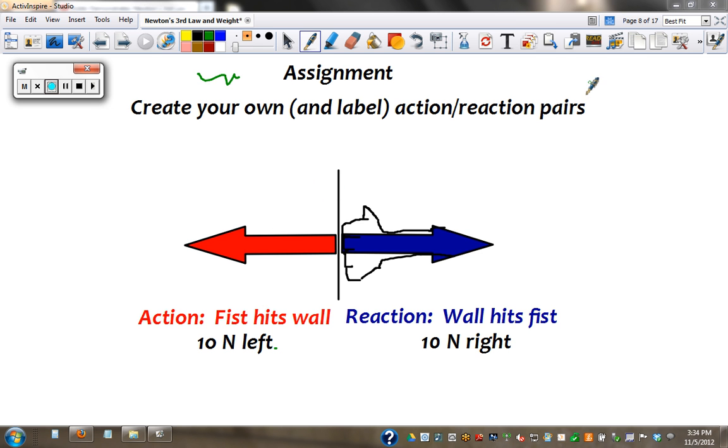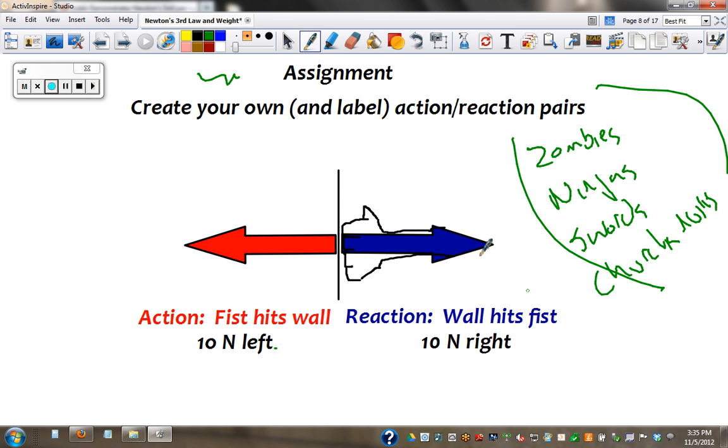So you need to create your own with separate colors, and you get extra snaps if they have to do with zombies, ninjas, swords, Chuck Norris, and anything else awesome. If you have these things in your action-reaction pairs, you get a super bonus. All right. Good job.